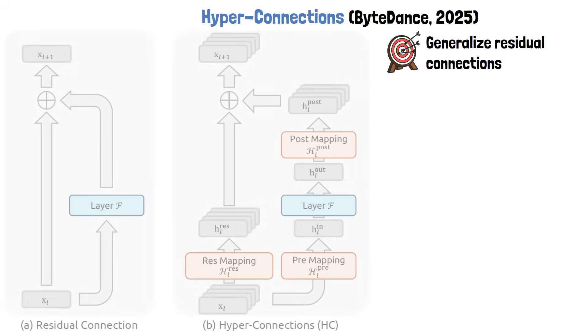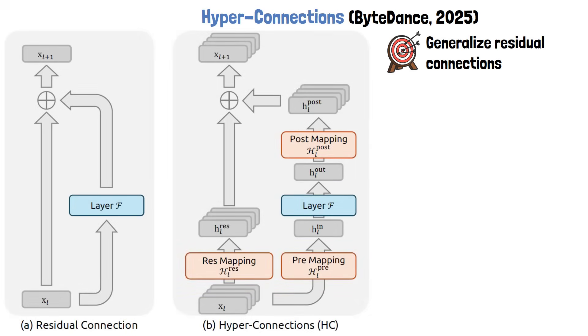Hyperconnections were introduced in a paper from ByteDance in 2025 with the goal of generalizing residual connections. We can understand the idea using the following figure, which shows a hyperconnections block next to a standard residual block. At a high level, hyperconnections extend the residual connection concept by widening the residual stream itself. Instead of a single residual vector, the residual is now expanded into multiple components that are mixed together at every layer using learned mappings.